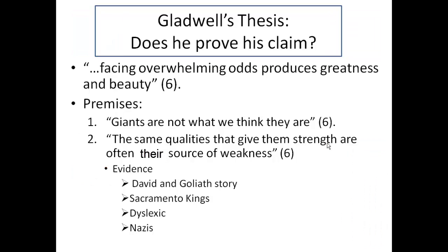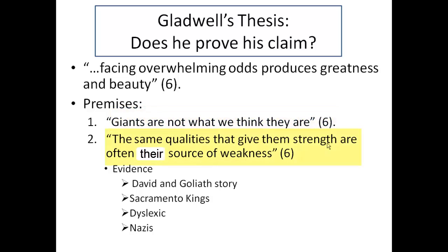Gladwell's thesis is found on page 6 when he writes: facing overwhelming odds produces greatness and beauty. Throughout the book, he attempts to prove this claim. He starts on page 6 with one of his premises — that giants are not what we think they are. He also writes: the same qualities that give giants strength are often their source of weakness.